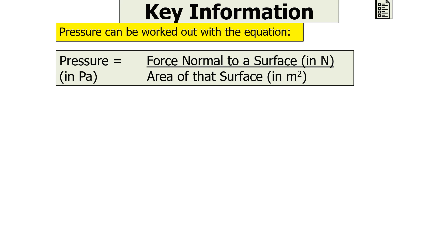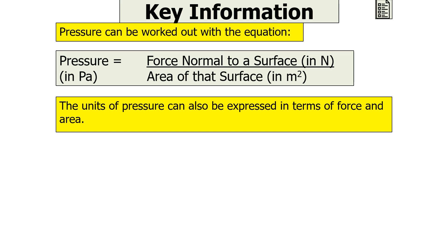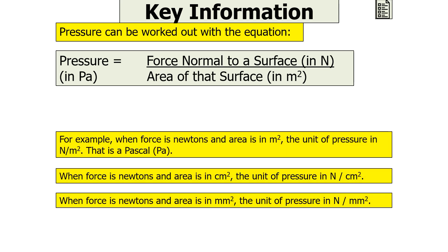The units of pressure can also be expressed in terms of force and area. When the force is in newtons and the area is in metres squared, the unit of pressure is newtons per metre squared, or the pascal. When the force is in newtons and the area is in centimetres squared, the unit is newtons per centimetre squared. And when the force is in newtons and the area is in millimetres squared, the unit is newtons per millimetre squared.